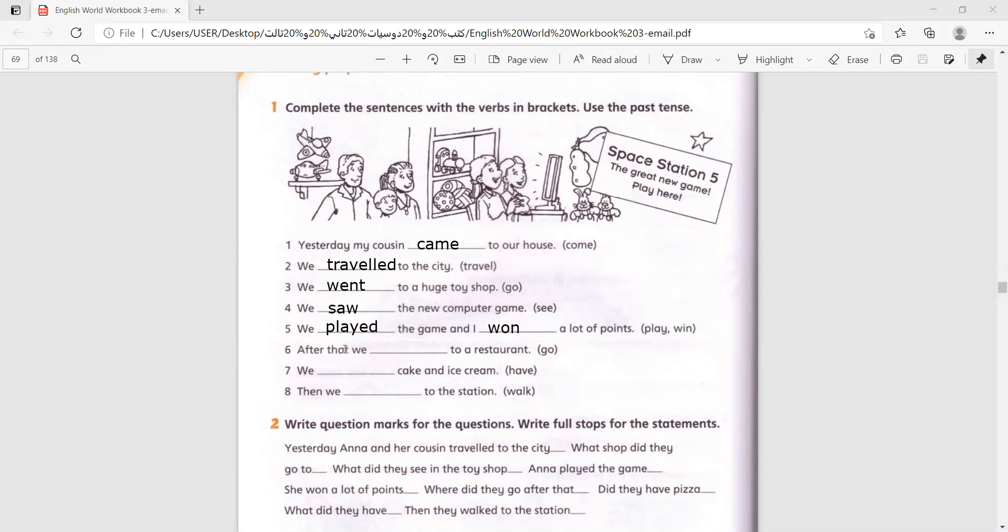Number six, after that, we blanked to a restaurant. Go. Went. We went to a restaurant. Number seven, we cake and ice cream. Have. Had. We had cake and ice cream.